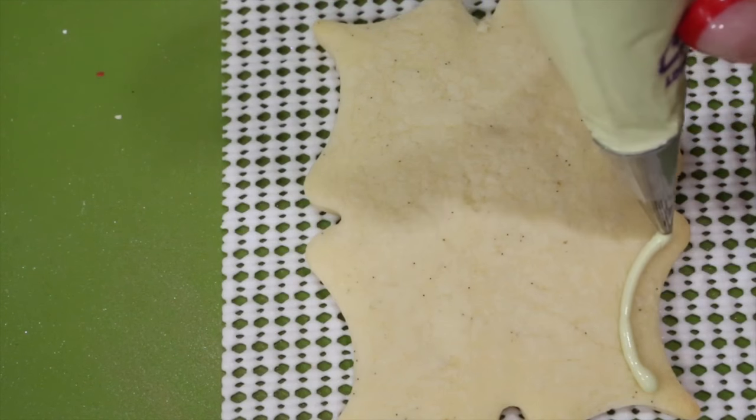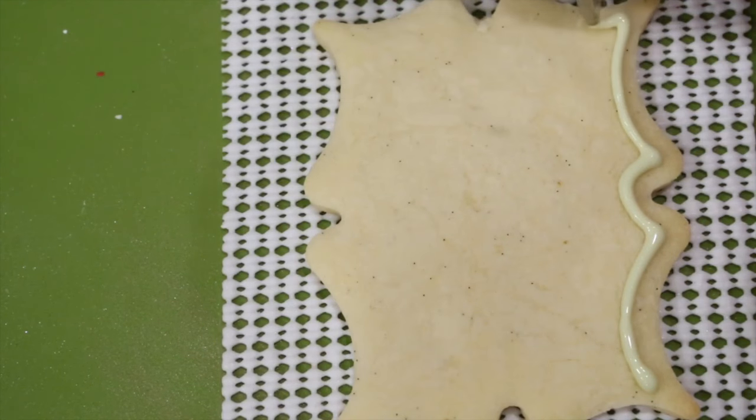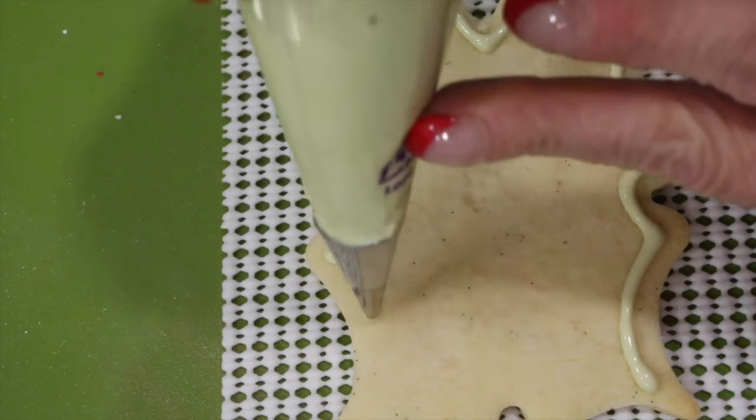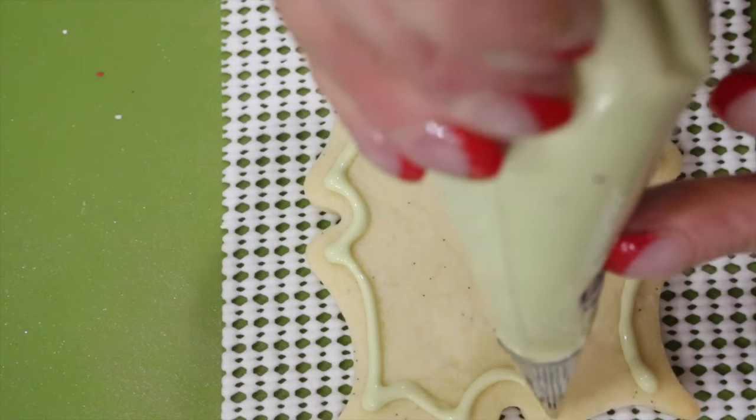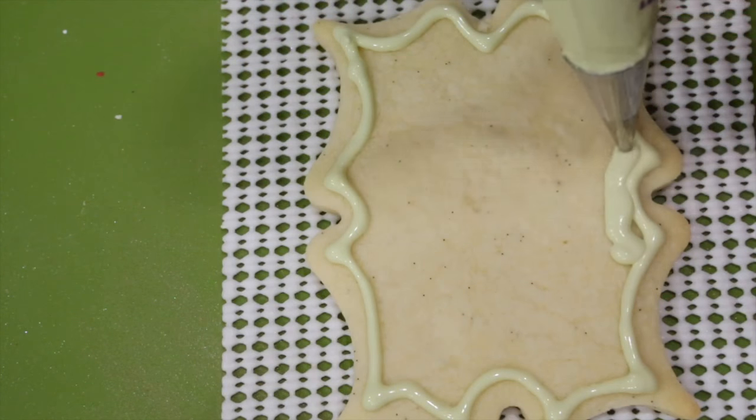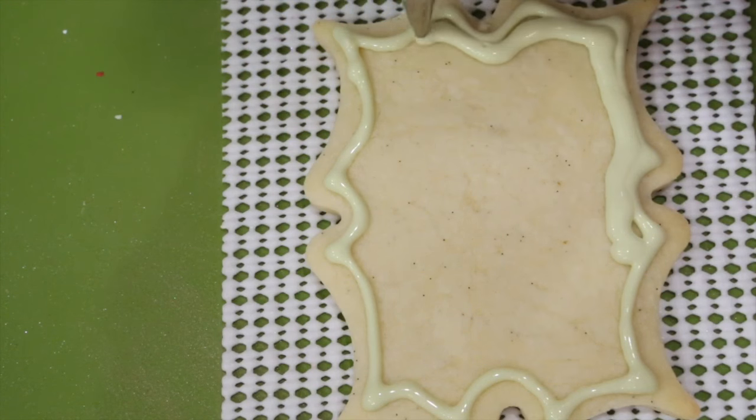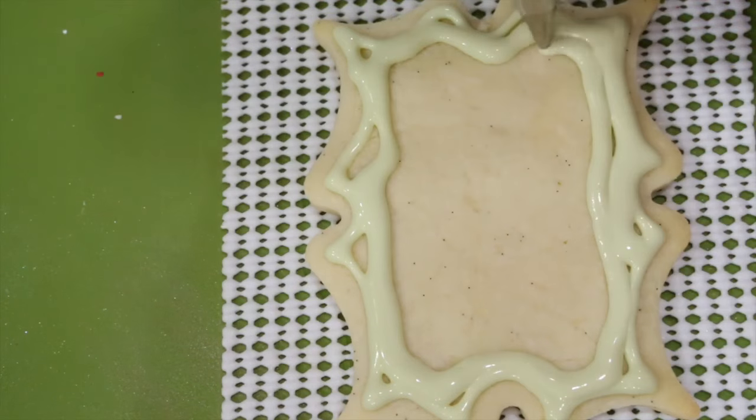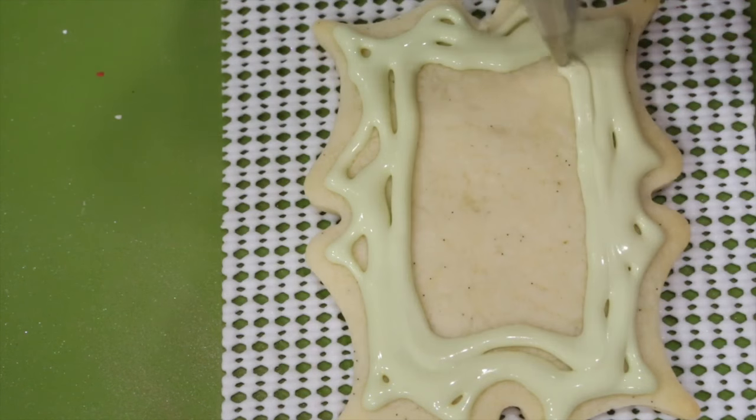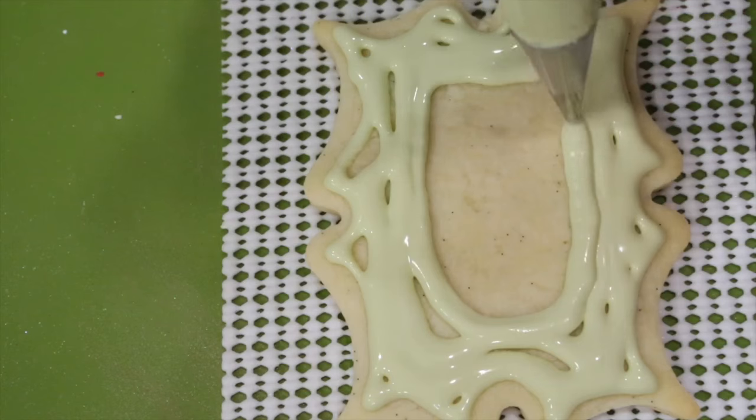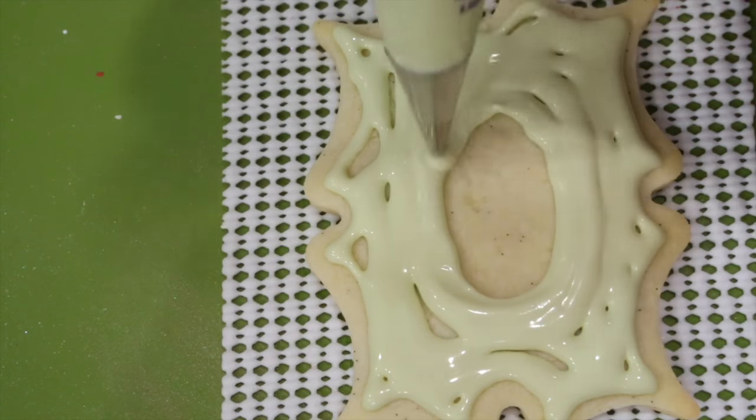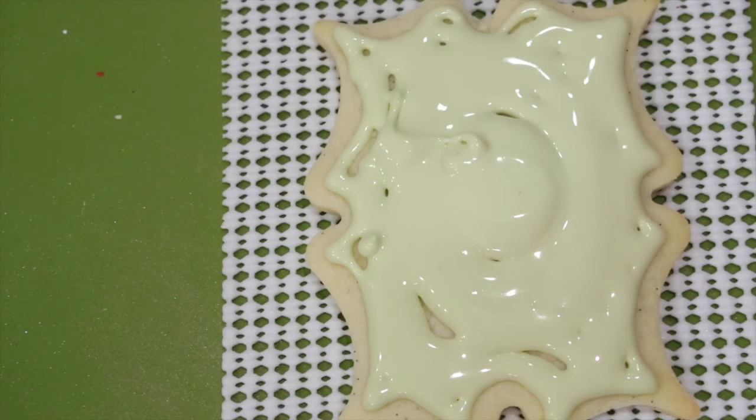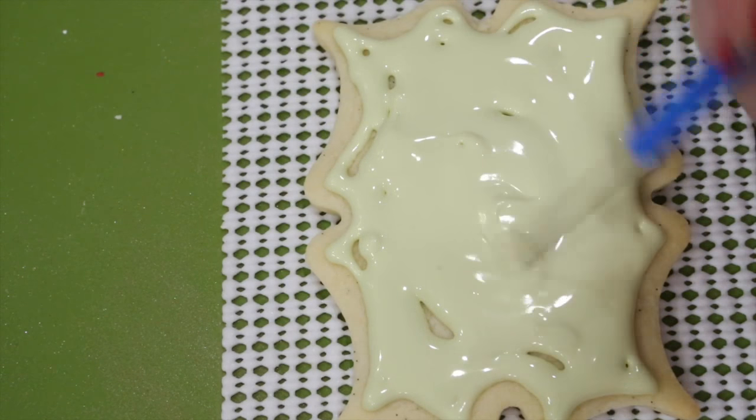Now go ahead and outline your decorative plaque cookie with some gooseberry green flood consistency icing and a number two nozzle. Fill it in and use your scribe nail to evenly distribute the icing.